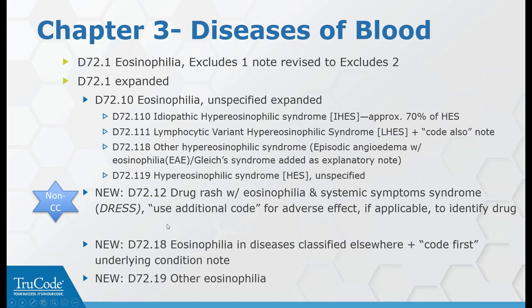A new code for DRESS syndrome — drug rash with eosinophilia and systemic symptoms — has been added with a use additional code note to identify the causative drug. This is a severe life-threatening drug reaction characterized by widespread skin rash with systemic symptoms including fever, lymphadenopathy, facial edema, and maculopapular rash. Systemic involvement can include the liver and interstitial lung tissue. It can be triggered by short or long-term drug exposure. Under D72, the code first underlined condition is a sequencing direction — code the underlying condition first, then D72 as a secondary diagnosis.